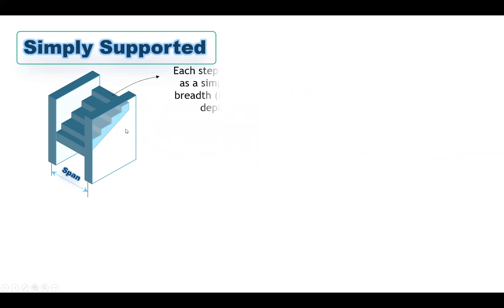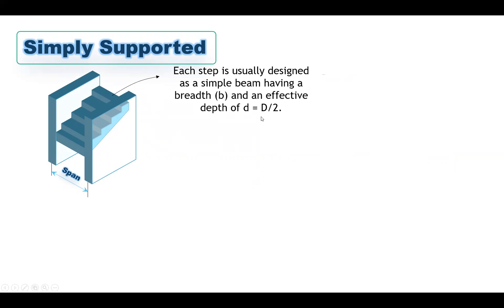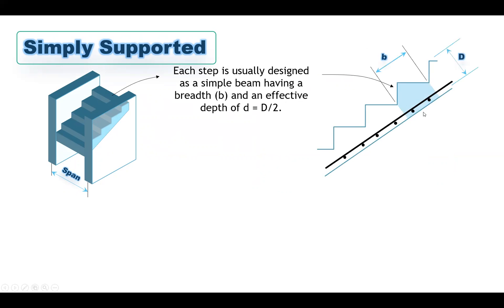Let's go to the second type — simply supported stairs, still spanning in the transverse direction. In this case, the stair is supported on two supports, not just one side, so it is not a cantilever anymore. Each step is usually designed as a simple beam having breadth b and an effective depth of D/2 — that is, half of the full height. The moment will be a positive moment.